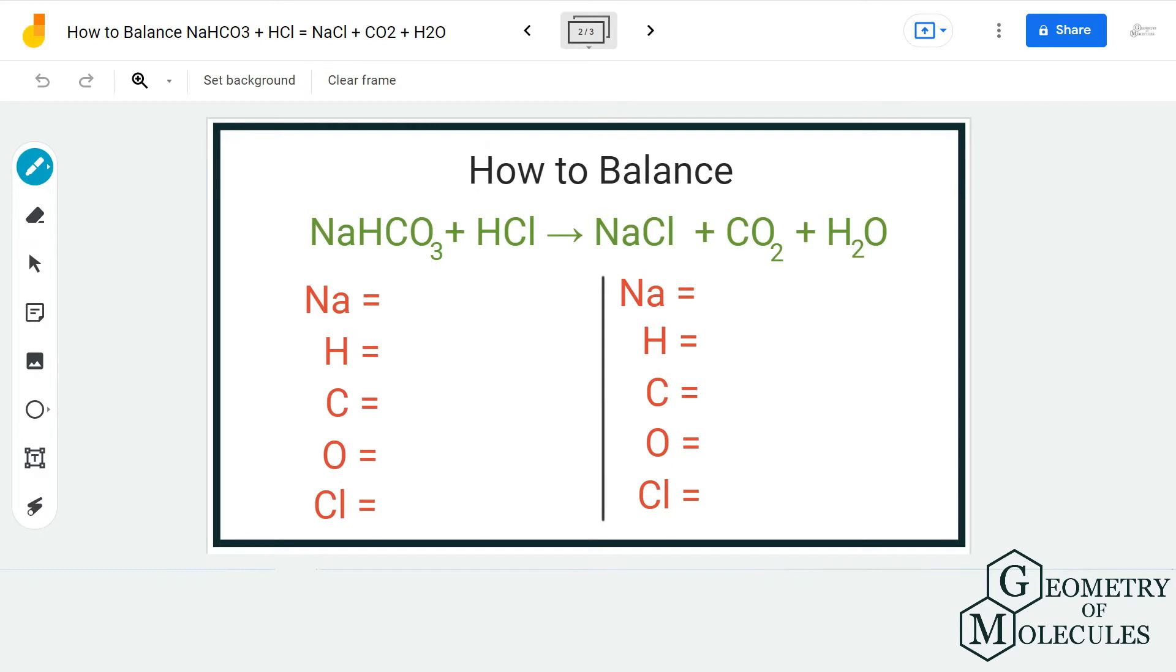For the reactant side we have one sodium atom. There are one plus one, two hydrogen atoms. Do not forget about this hydrogen atom because this is what generally creates the confusion. We have one carbon atom, three oxygen atoms, and one chlorine atom.